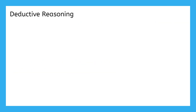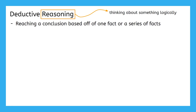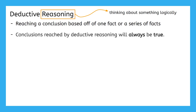The first of the two types of reasoning we're going to talk about today is deductive reasoning. I've already used the word reasoning a whole lot, so let's make sure we define it. Reasoning just means thinking about something logically. Deductive reasoning, specifically, means reaching a conclusion based off of one fact or a series of facts. The key word here is fact. Since we are only working with facts, the conclusions reached by deductive reasoning will always be true.